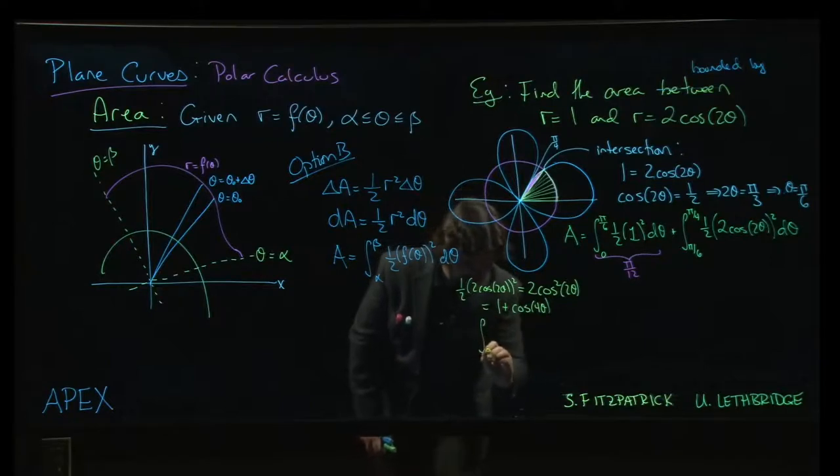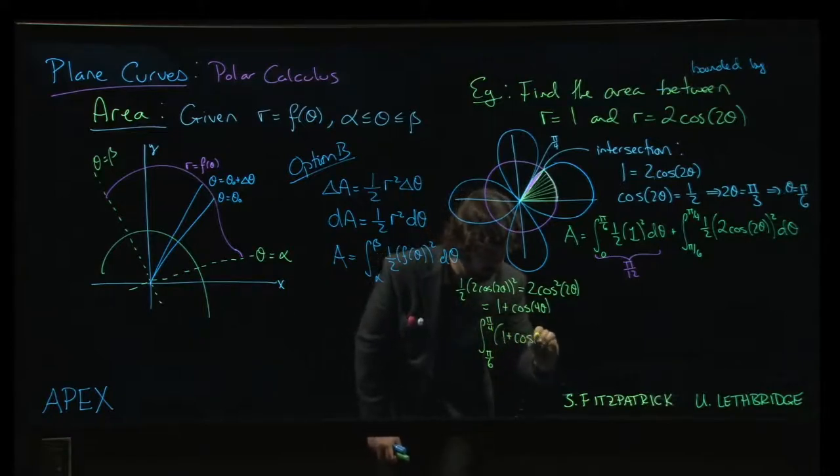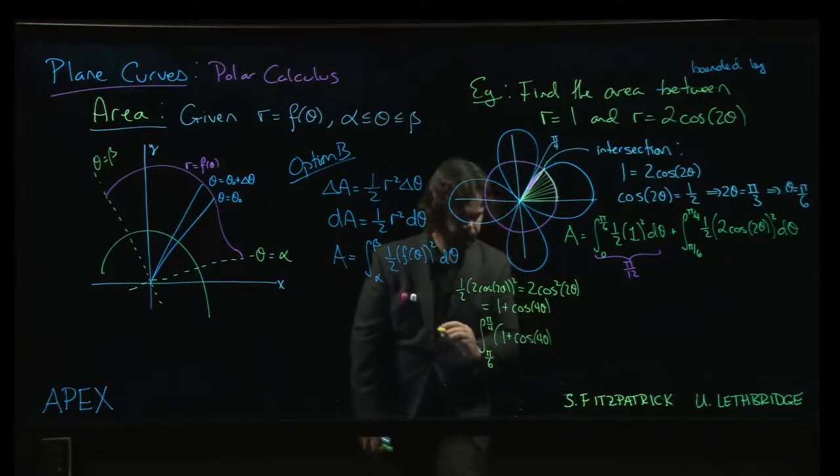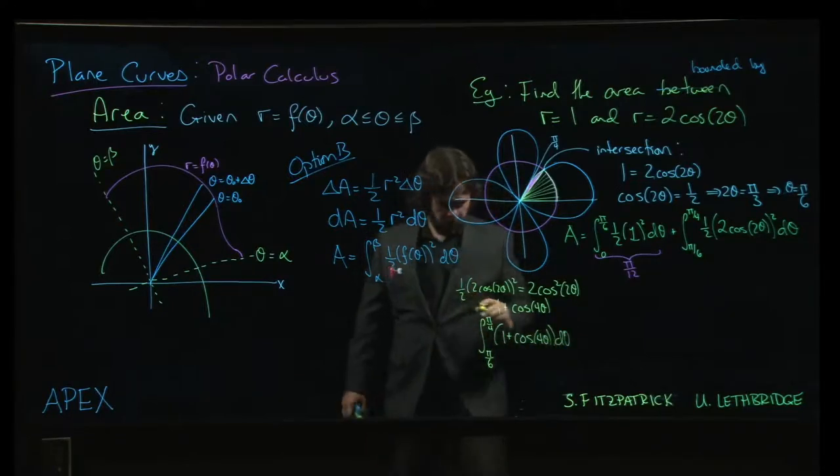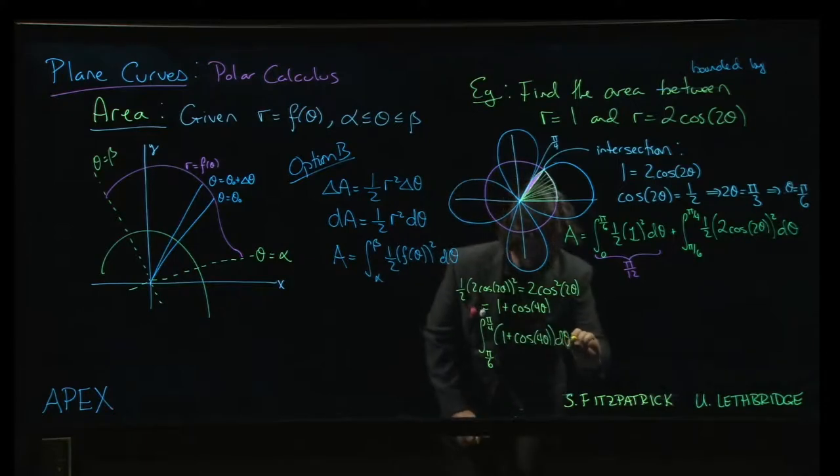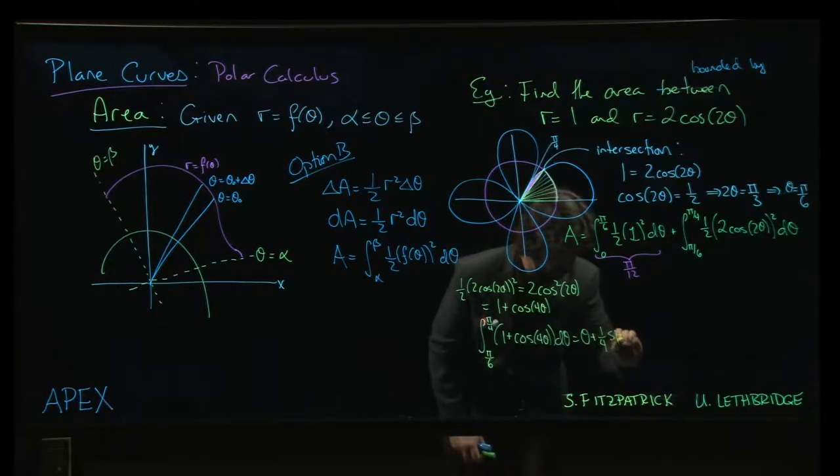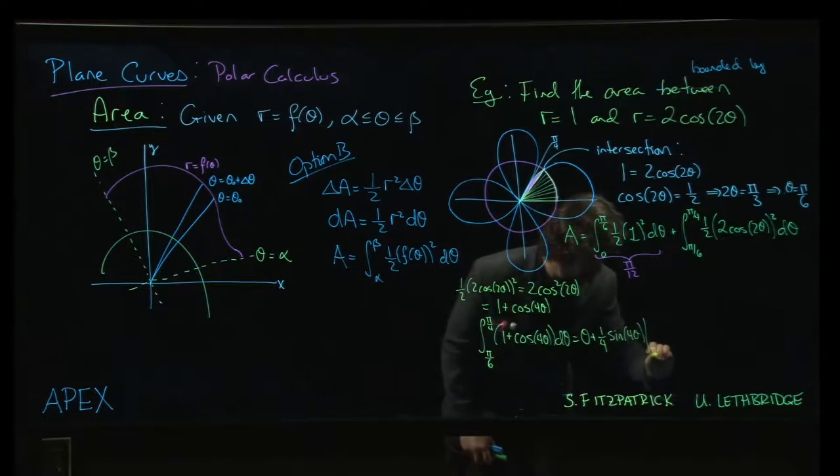So when we integrate, we're going to get the integral from pi over 6 to pi over 4 of 1 plus cos 4 theta d theta. And that's going to give me theta plus 1 over 4 sin 4 theta from pi over 4 to pi over 6.